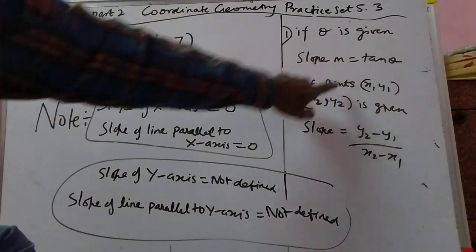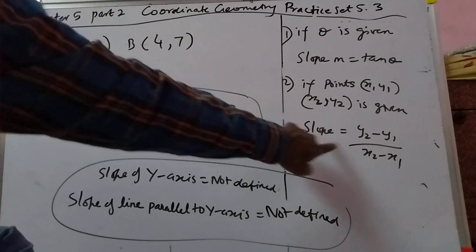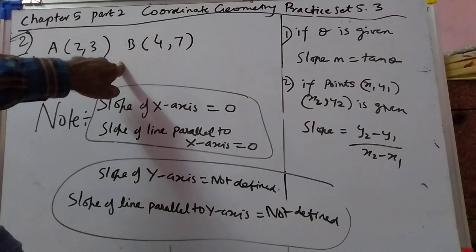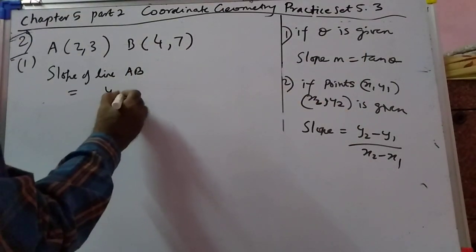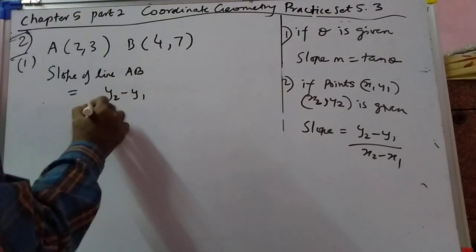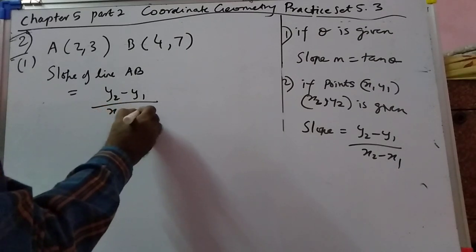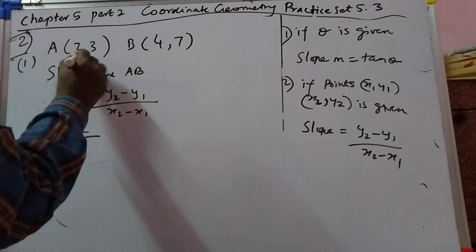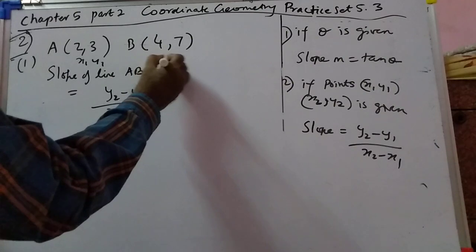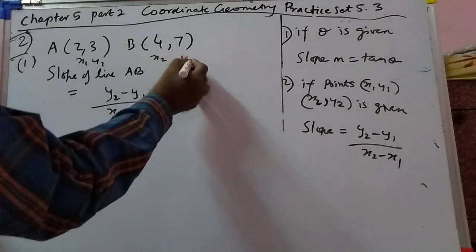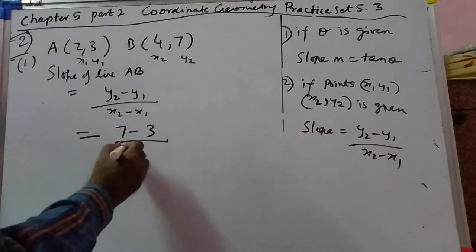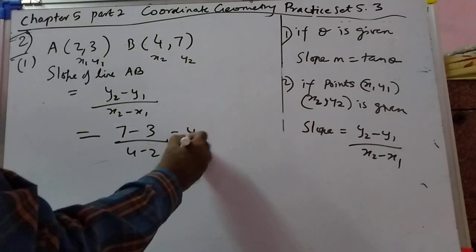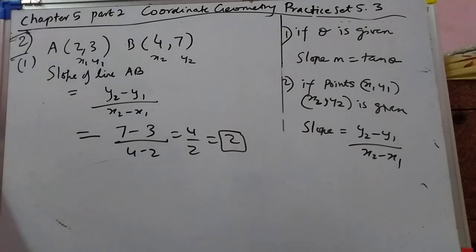Theta is given — this is the formula. Points are given — this is the formula that we will use. Take the points as (x1, y1) and (x2, y2): 7 minus 3 over 4 minus 2, which is 4 upon 2, that is 2.